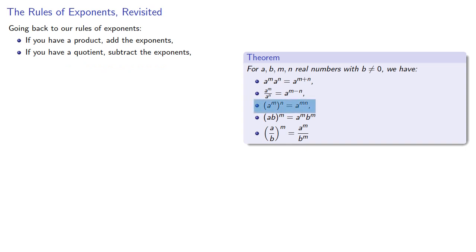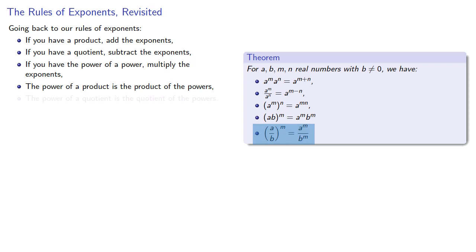Here, the item inside the parentheses, we do whatever we do with that, and then we raise it to the nth power. So if you have a power of a power, multiply the exponents. Here we have a power of a product, and that's the product of the powers. And finally, the power of a quotient is the quotient of the powers.